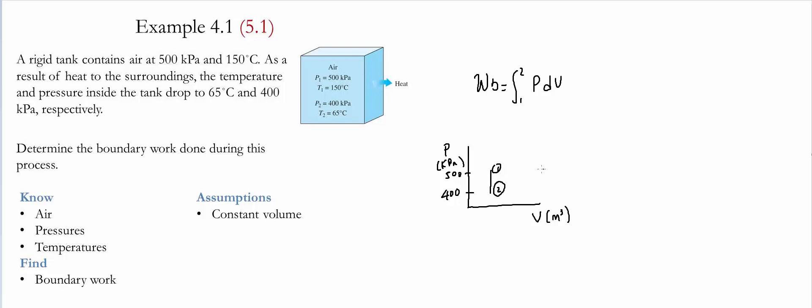Because it is a vertical line, it indicates that there is no area underneath the curve, and the value of the boundary work will be equal to zero. Therefore, every single time that there is a process with constant volume, the boundary work will be equal to zero.